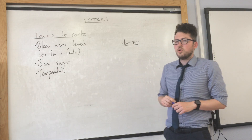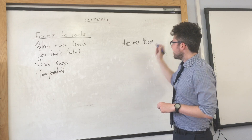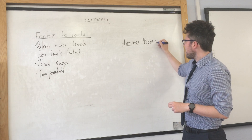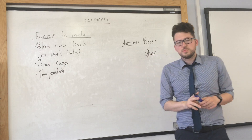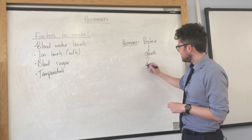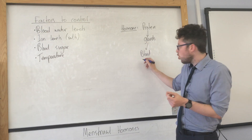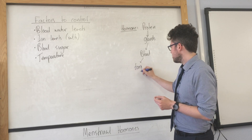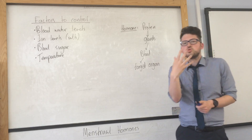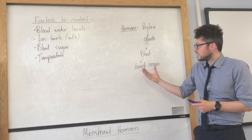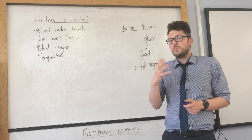Coming on to a definition of a hormone: a hormone is a protein that is produced by glands, transported in the blood to a target organ. Hormones allow us to control our body's conditions by having an effect upon that target organ. I'm going to go through an example of how hormones are used in the body.